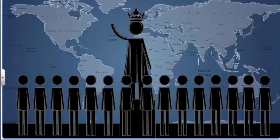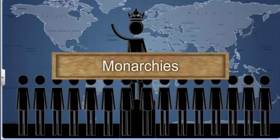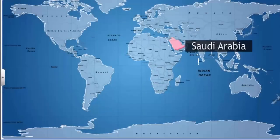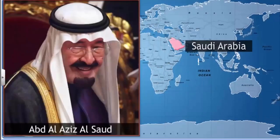These countries are not democracies but monarchies. For example, Saudi Arabia is a monarchy where the kings have ruled because they are born into the royal family.